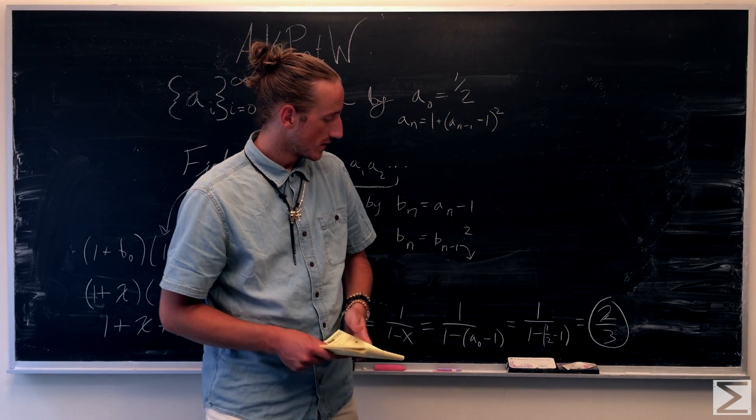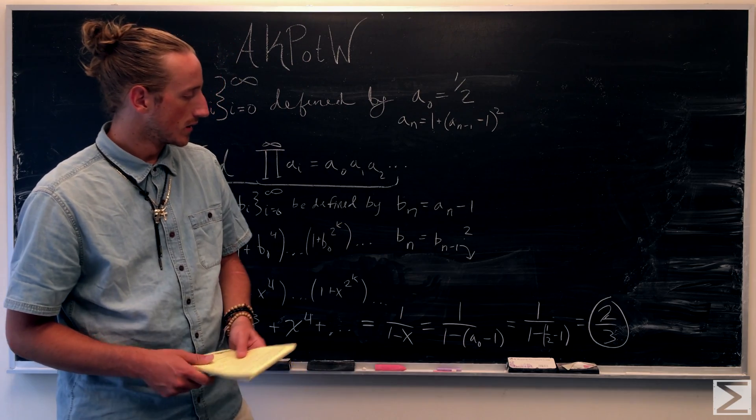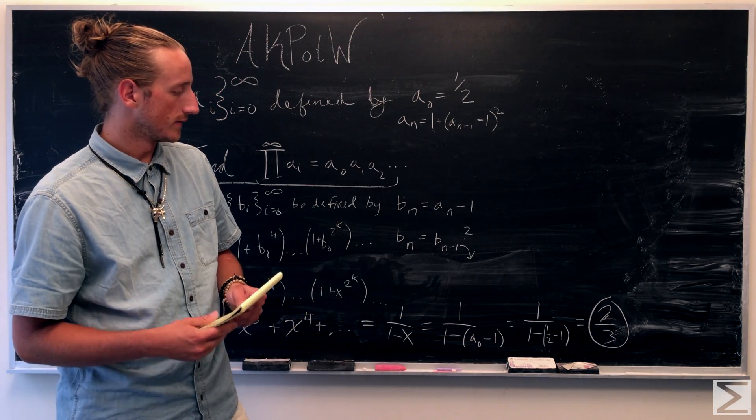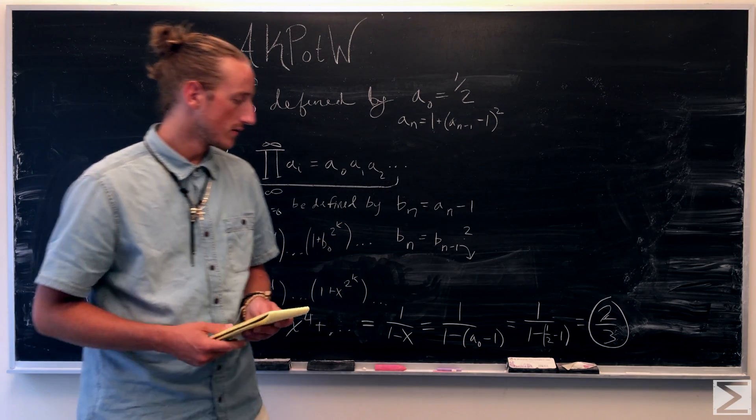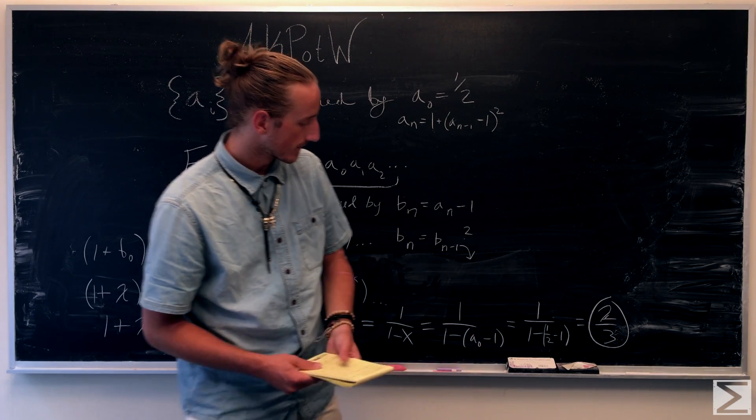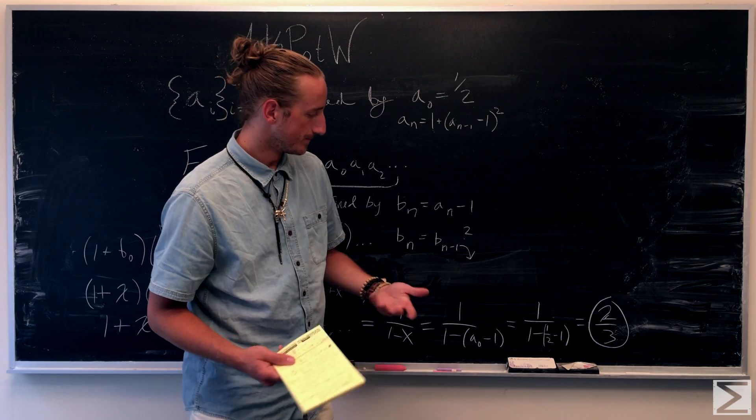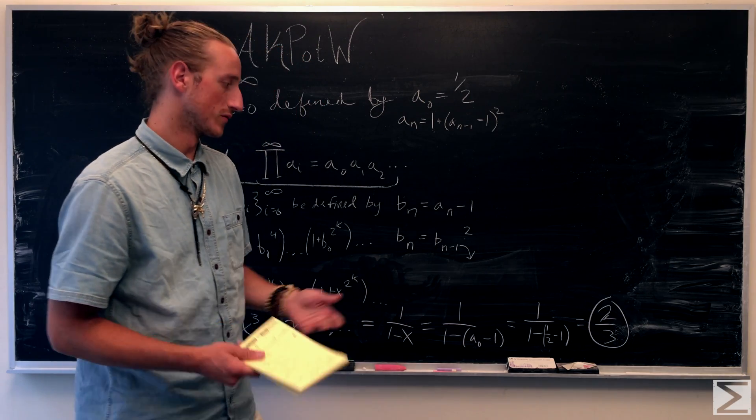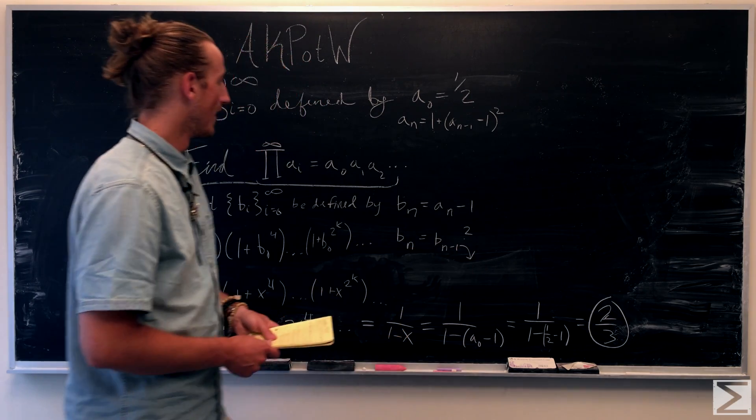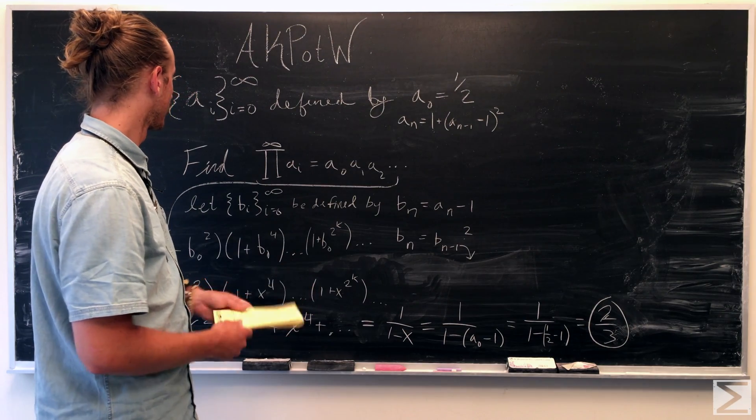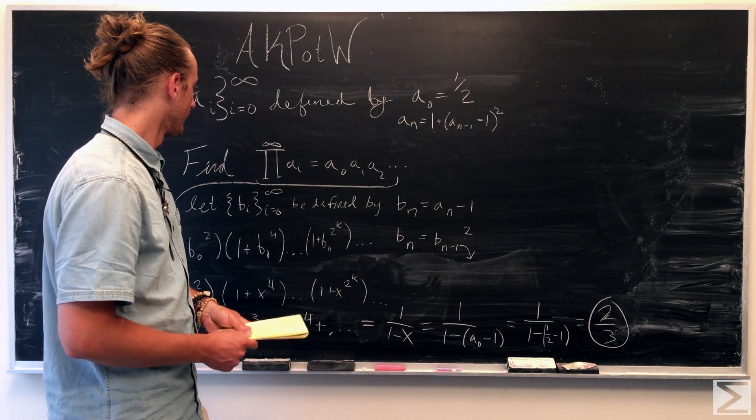So one minus a half minus one is just going to be one minus minus a half. So it's one all over one and a half, which gives us two thirds. So that gives us this infinite product.